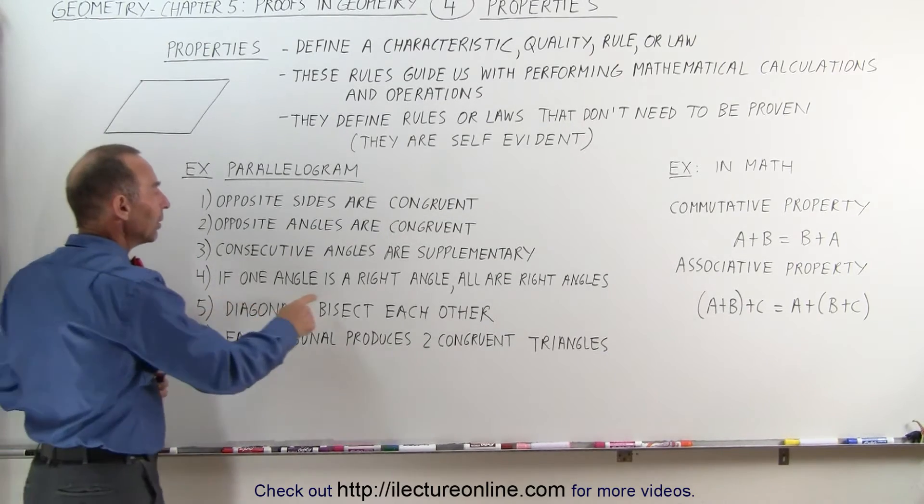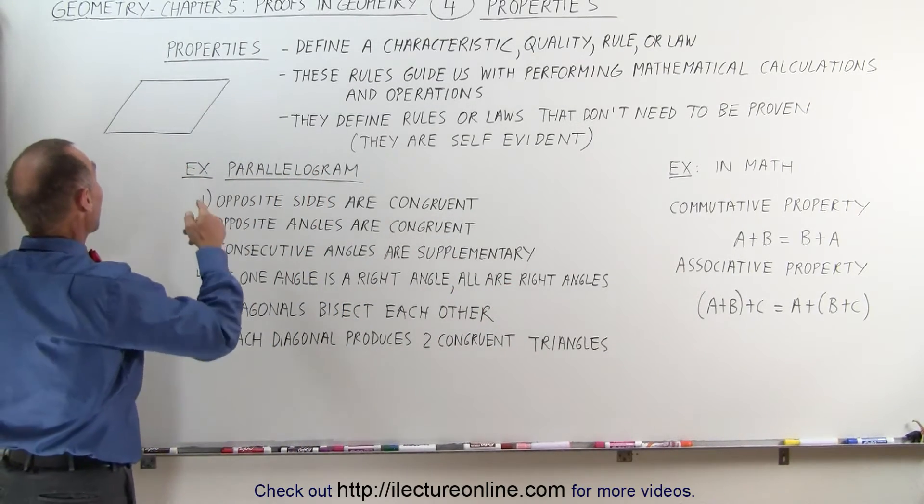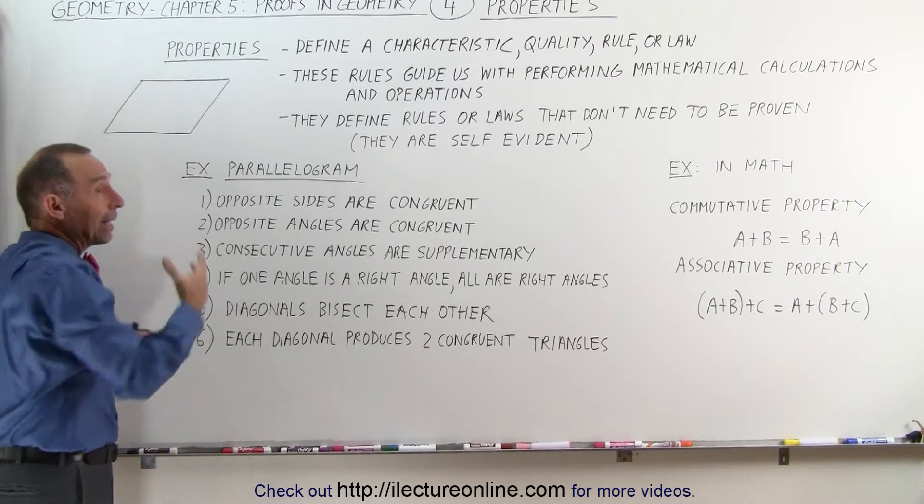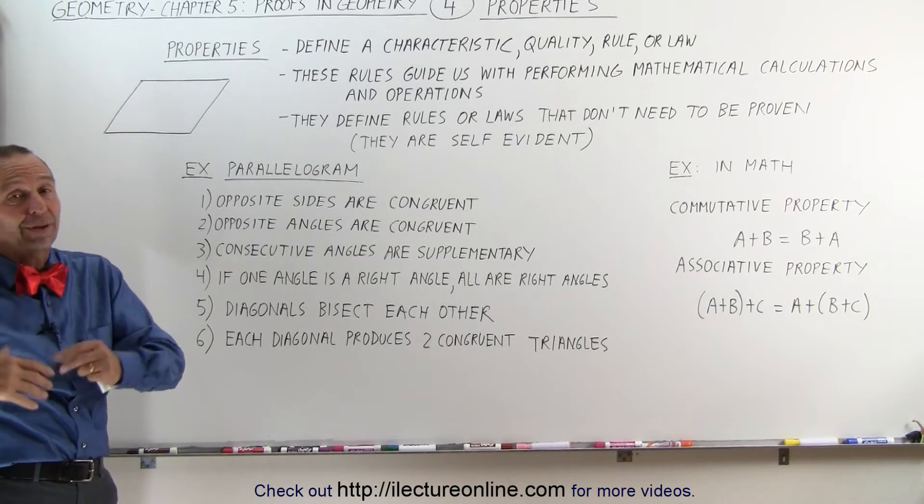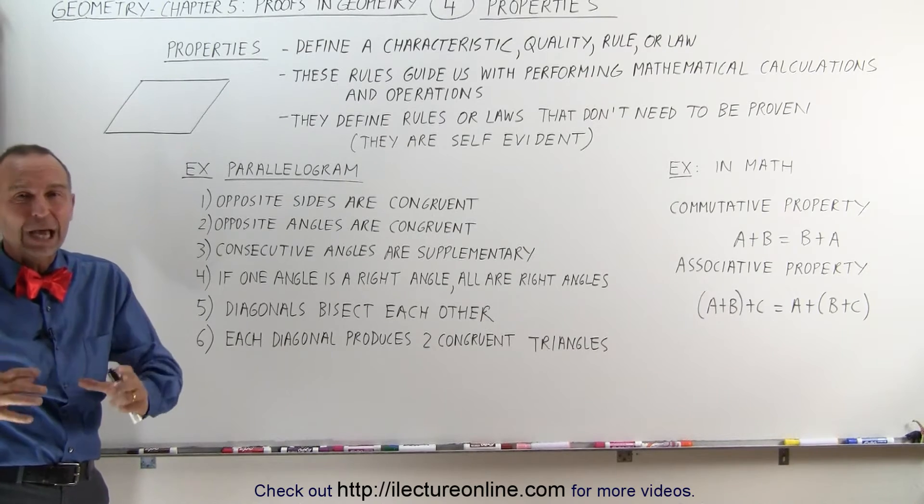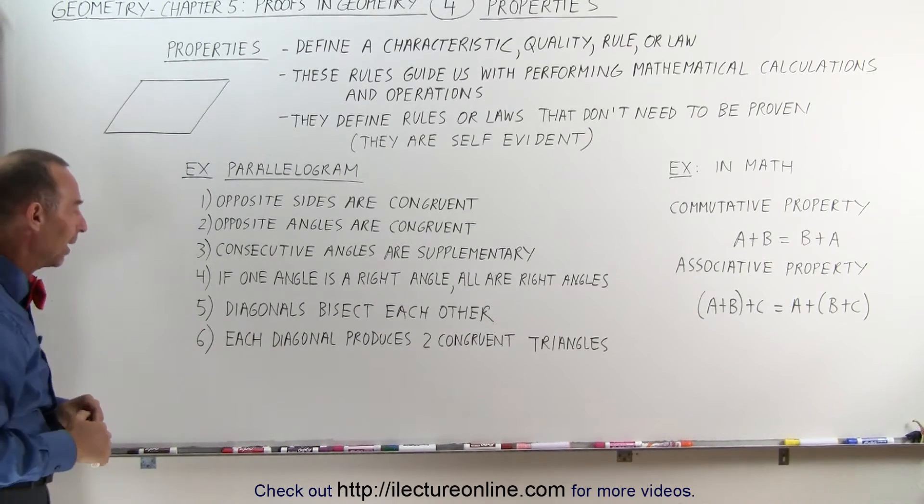If one angle is a right angle, all are right angles. So if we have a parallelogram, but one of the four angles is a right angle, that means all four are right angles, and then we no longer have a parallelogram, but specifically a rectangle, which is a special type of parallelogram.